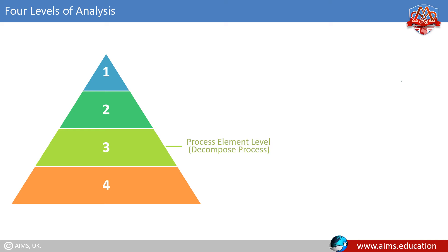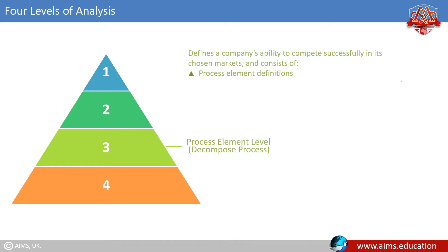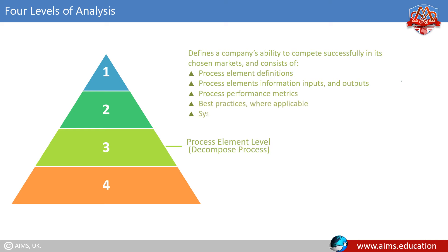At level three, each process category from level two is presented in detail. This level defines a company's ability to compete successfully in its chosen markets and consists of: process element definitions, process element information inputs and outputs, process performance metrics, best practices where applicable, and system capabilities required to support best practices, as well as systems and tools.